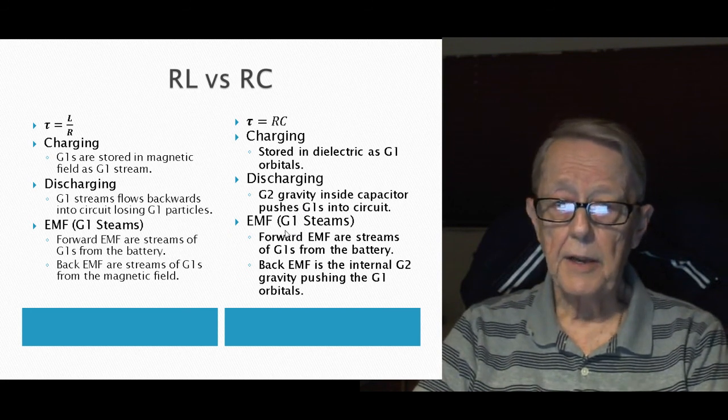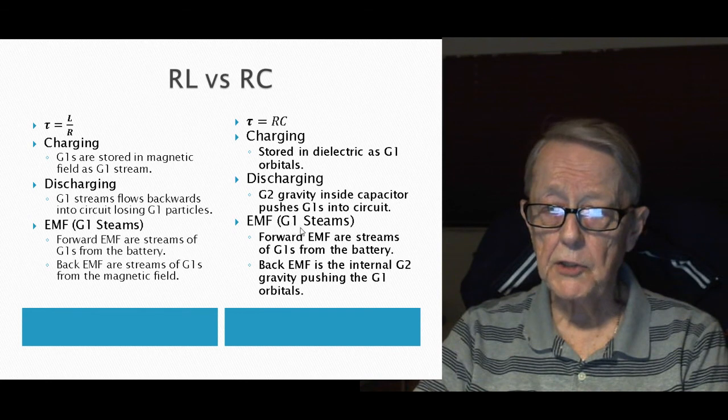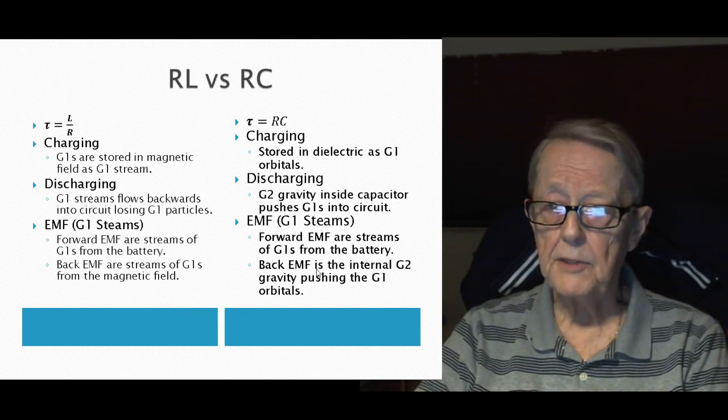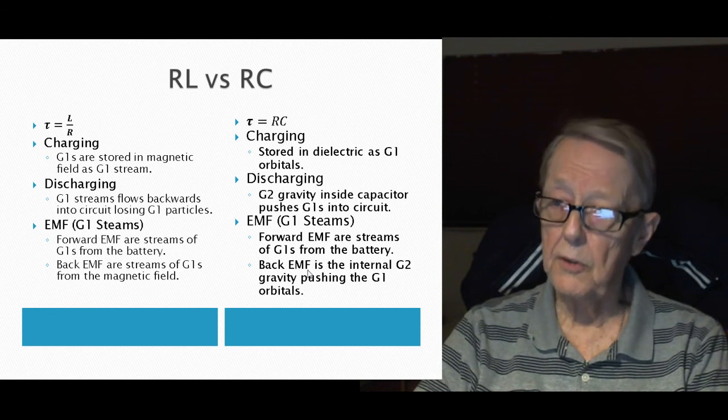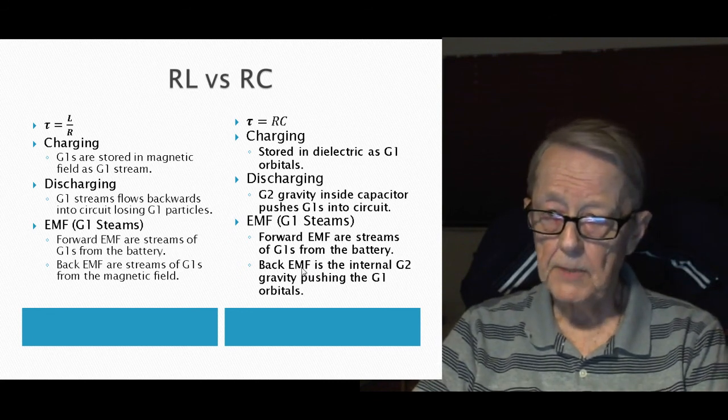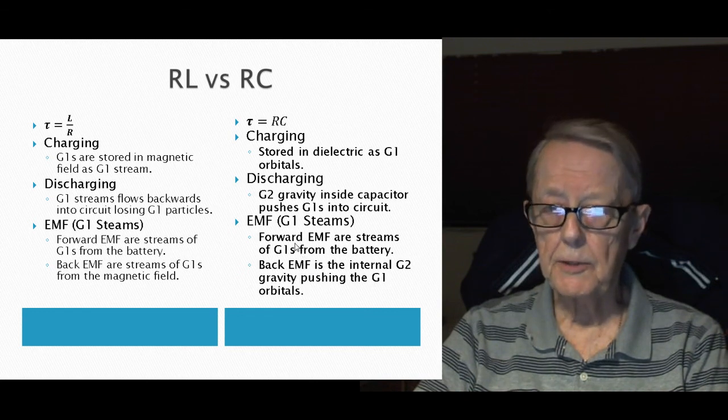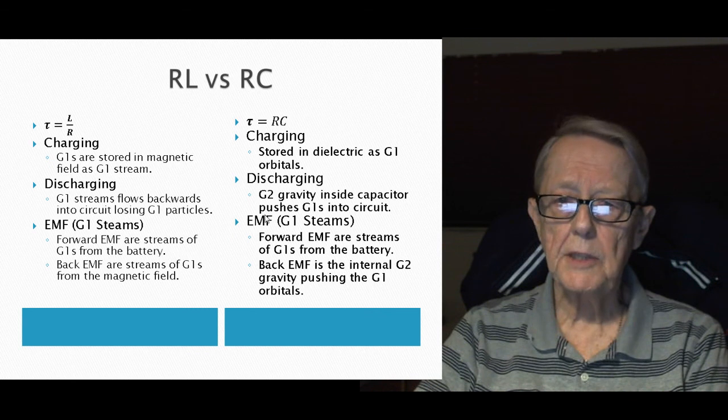And as far as the EMF, it is still a stream, the forward EMF comes from the battery, the back EMF is the internal G2 gravity pushing the orbitals out of the dielectric into the circuit and back through the resistor to discharge. That's my summary of the RL and RC circuit.